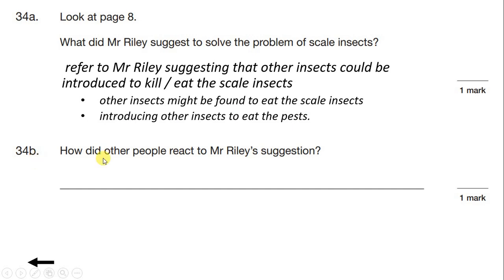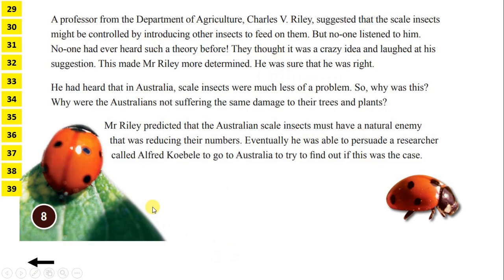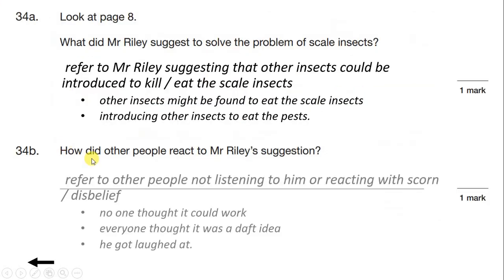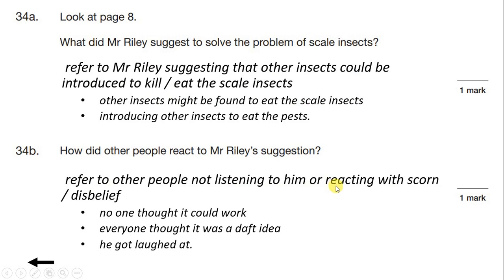Question 34b: How did other people react to Mr Riley's suggestion? Let's keep on reading. But no one listened to him. No one had ever heard such a theory before. They thought it was a crazy idea and laughed at his suggestion. This made Mr Riley more determined. He was sure that he was right. So we need to point out that no one listened to him, people thought it was a crazy idea, or people laughed at him — we need to refer to other people not listening to him, or reacting with scorn or disbelief.